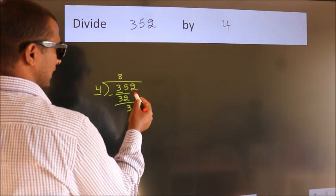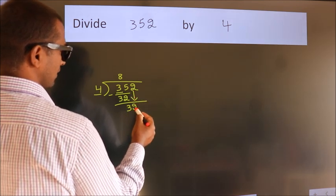After this, bring down the beside number. So 2 down. So 32.